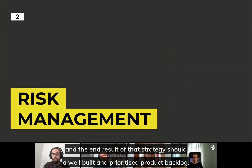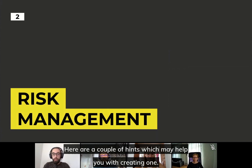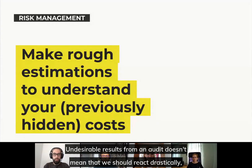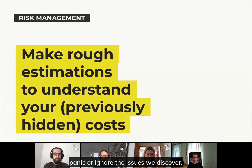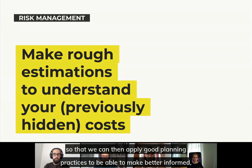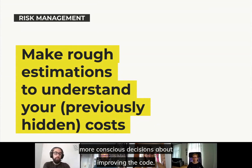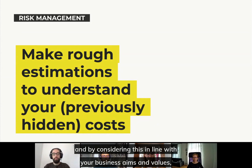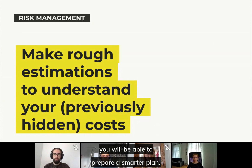The end result of such a strategy should be a well-built and prioritized product backlog. Let's give a couple of hints which may help you with creating one. Undesirable results from an audit doesn't mean that we should react drastically, panic, or ignore the issues we discover. Moreover, we should view it as an opportunity to understand the weaknesses in our code, so that we can apply good planning practices to make more conscious decisions about improving the code. Ask your team about rough estimations, and by considering this in line with your business aims and values, you will be able to prepare a smarter plan.